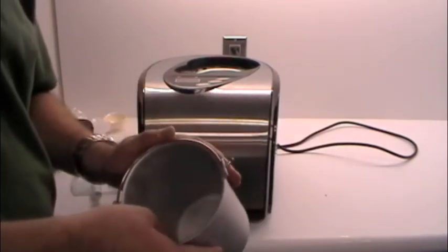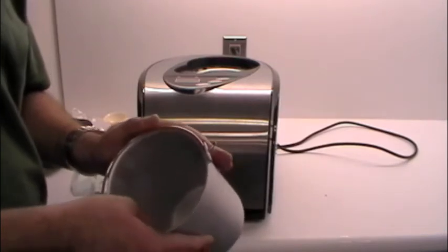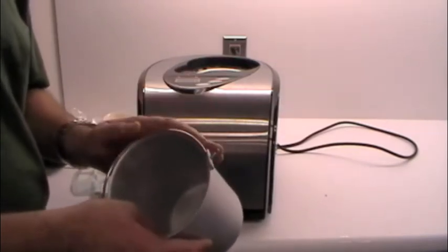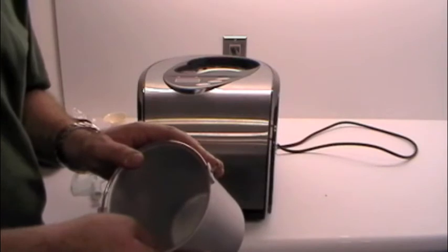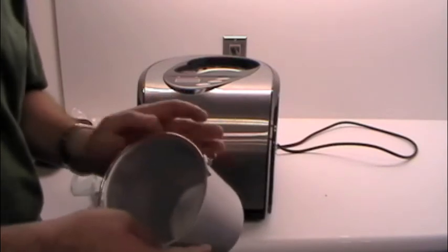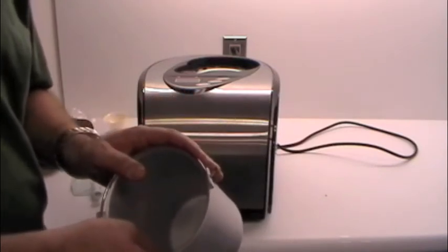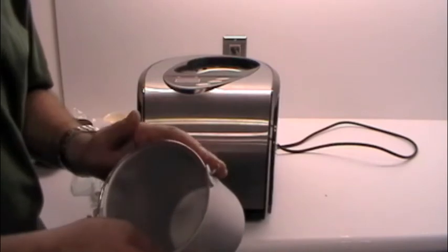This bucket has a couple of dual functions. Number one, you actually make the mix in this bucket, but you can also store your ice cream in this bucket when you're done. You can just cover it with some plastic wrap. Whatever you might have, aluminum foil, and it'll keep quite nicely in the deep freezer.